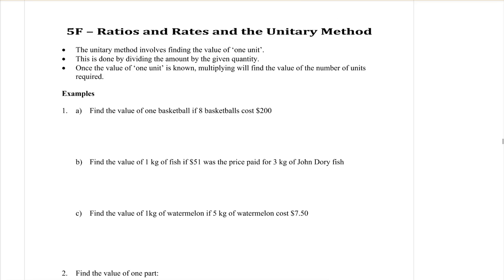Last lesson when we learned about rates for the first time, what we were doing was finding the rate per one. So if it was meters per second, it was how many meters can I cover in one second, or how many dollars does it cost for one kilogram. When we find a rate, we're finding what we call a unitary method. We're finding the cost or the distance or whatever it is for one of something. So what we want to do is use that today to help us with some problems. The unitary method involves finding the value of one unit. This is done by dividing the amount by the given quantity. Once we know the value of one unit, we will multiply to find the value of the number of units required.